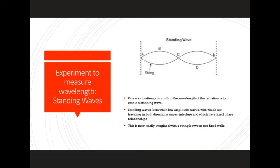Now we're going to attempt to measure the wavelength using a standing wave. Standing waves form when low amplitude waves traveling in both directions interfere and have fixed phase relationships. Here we have a standing wave represented with a string between two fixed barriers. We can imagine one wave traveling this way and the other wave traveling the opposite way. The distance they travel can be called r. Each one of these waves travels one wavelength within this configuration.